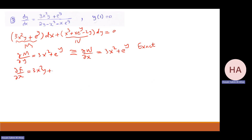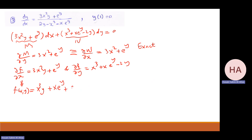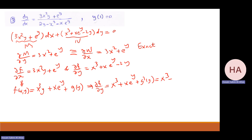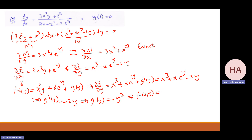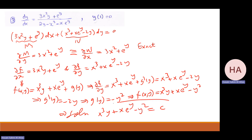I have partial f with partial x is this one, and partial f with partial y is the other one. Let me start with this one. f of x and y, integrating with respect to x: I have x cubed y, plus x e to the power y — considering e to the power y as a constant — plus function of y. So partial f with partial y will be x cubed plus x e to the power y plus g prime of y, which equals the other side minus 2y. So g prime of y equals minus 2y, meaning g of y equals minus y squared. So f of x and y equals x cubed y plus x e^y minus y squared. Solution: this equals c.